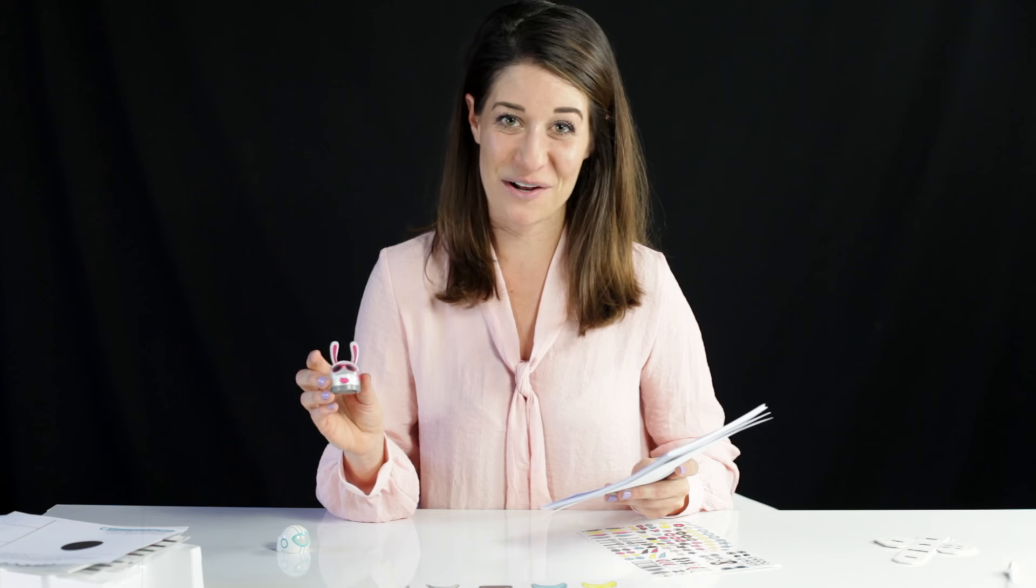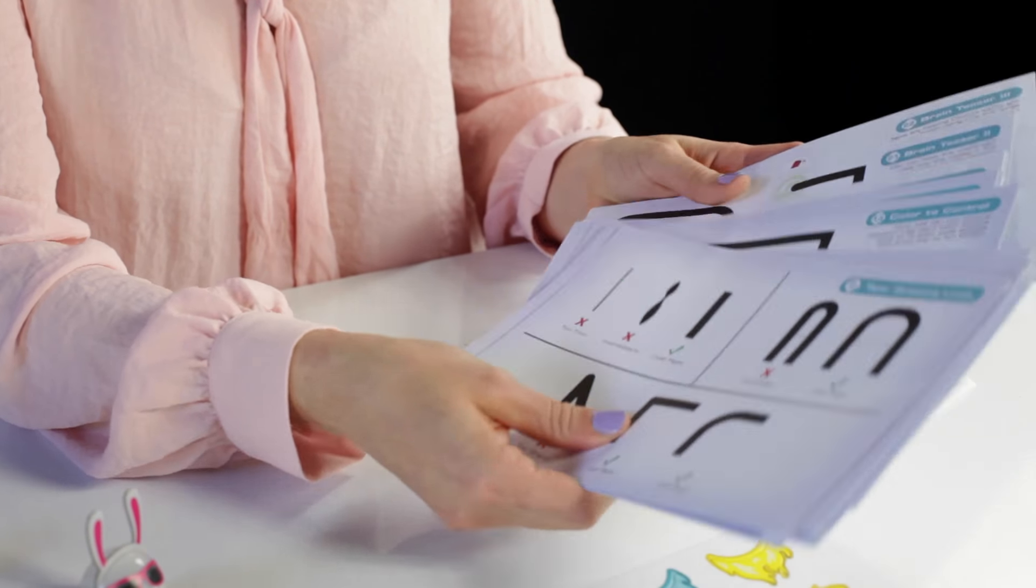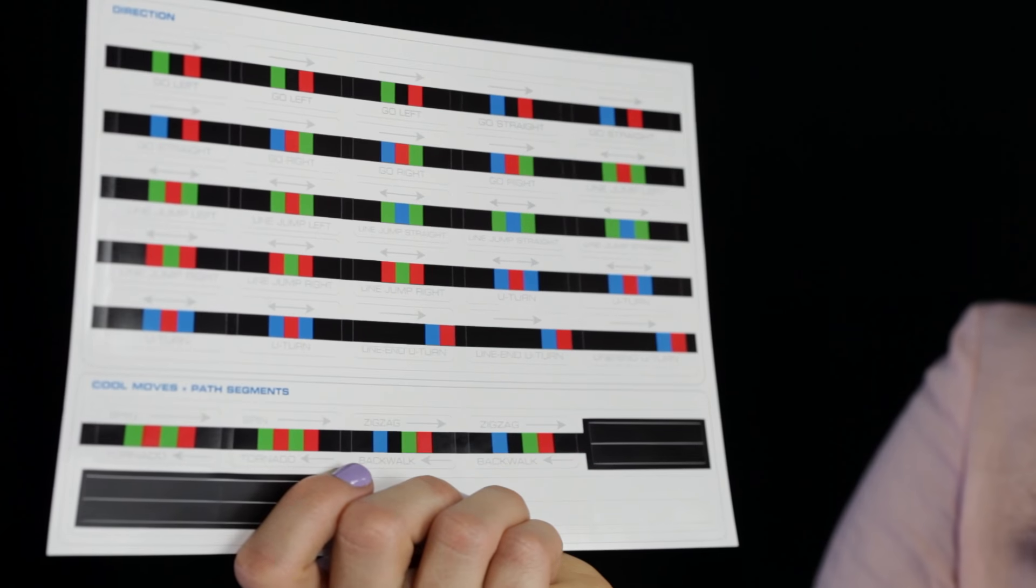After you're done customizing your Ozobot, you can start playing with over 20 different STEM and do-it-yourself activities. Let's start color coding with the markers. But before we start color coding with the markers, what is color coding? Color coding is a combination of colors, and Ozobot recognizes them. Let's get started.